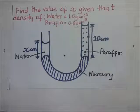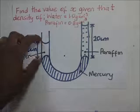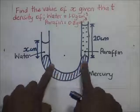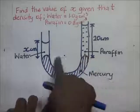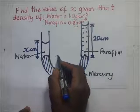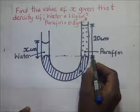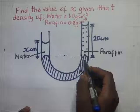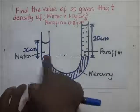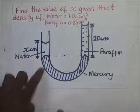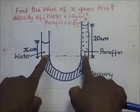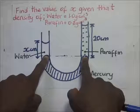To find the value of x, we notice that these two levels are at the same height. If they are at the same level, then the pressure exerted at this level is the same as the pressure exerted at that level.